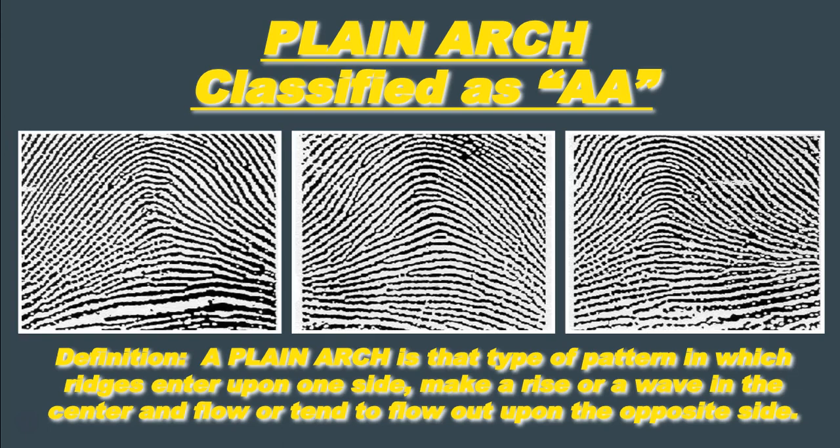In terms of the definition, plain arches are patterns in which the ridges enter upon one side, make a rise or a wave in the center, and flow out upon the opposite side. Here are three good examples of plain arches. We see the ridges flow in from one side, rise up, and flow out the other side. Plain arches are very easy to pick out because we don't see any recurves, circuits, or deltas. Later when we talk about comparisons, we'll find that arches can be some of the more difficult fingerprints to compare because they lack some features needed for a good comparison.